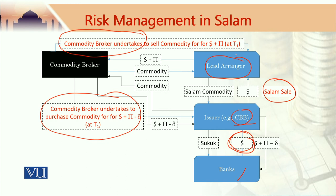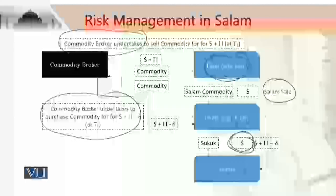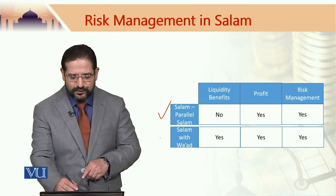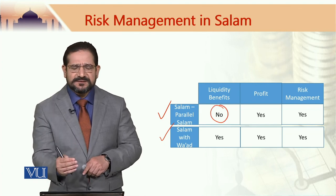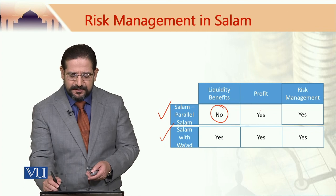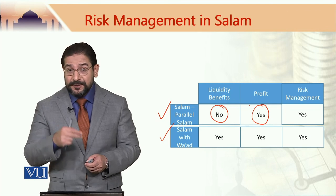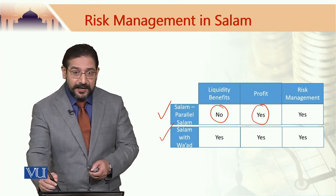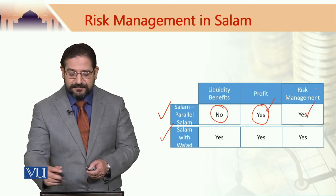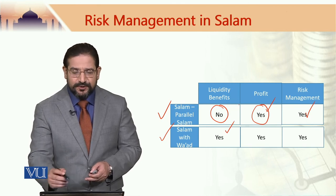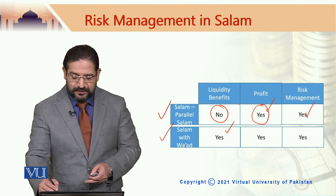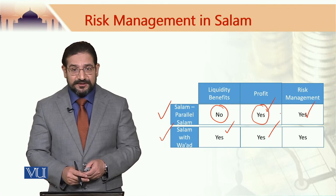If that is the case, the lead arranger would be able to benefit from risk management, benefit from liquidity, and earn some profit as well. To summarize the comparison between a SALAM parallel SALAM structure and a SALAM with WAD structure: in the case of SALAM parallel SALAM, liquidity benefits are minimized — they may be almost zero — however, this structure does allow Party A to earn some profit and it has risk management benefits. SALAM with WAD is a preferred choice because it gives liquidity benefits, offers an opportunity to earn profit, and is a very good risk management tool.